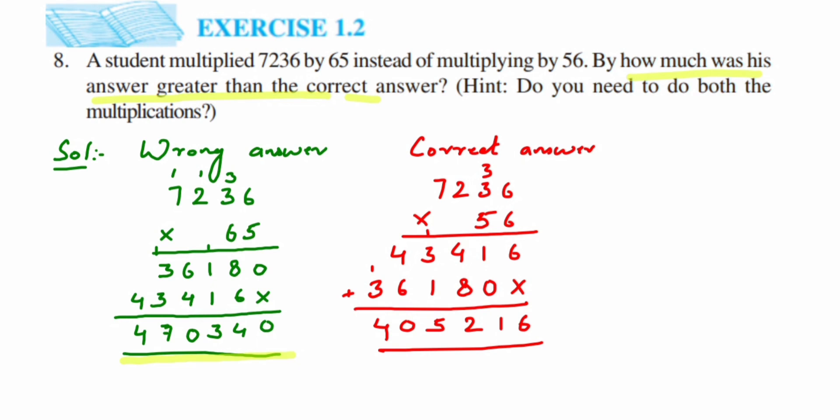So let's find out the answer here, that's the last thing we have to do. So difference in answer will be, we're going to subtract these two numbers. So we write 470340 subtract, and then 405216, subtract it.